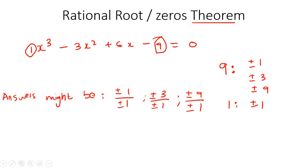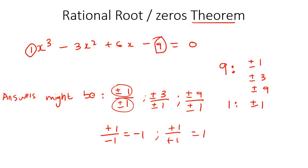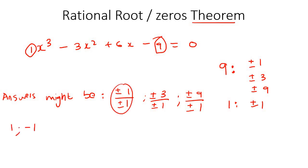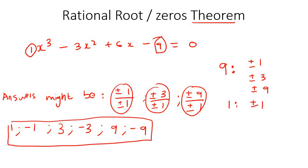For example, if we use a positive at the top and a negative at the bottom, that would be positive 1 over negative 1, which is negative 1. Or a positive 1 at the top and a positive 1 at the bottom, which equals 1. Here you can use any combination. Let's write out every single combination: we could get 1 or negative 1; positive 3 divided by positive 1 is 3, or positive and negative gives negative 3; and we could get positive 9 or negative 9. So these are the possible rational roots — it doesn't mean those are the roots, but it could be one or two of those.